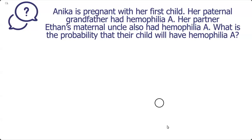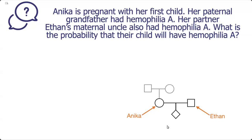Let's start by drawing our pedigree. This is Anika, and her partner is Ethan. Females are shown with circles and males are shown with squares. Anika is pregnant, and we don't know the sex of the child, so it's shown with a diamond. Let's do Anika's family history first.